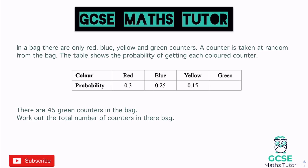We need to find the probability of green first. Adding the known values: 0.3 + 0.25 + 0.15 = 0.70. So we're missing 0.3, or 30%.